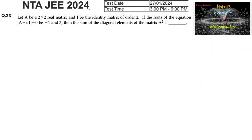Let capital A be a 2×2 real matrix and I be the identity matrix of order 2. If the roots of the equation det(A − xI) = 0 are −1 and 3, then find the sum of the diagonal elements of the matrix A². Let A = [[a, b], [c, d]] and I = [[1, 0], [0, 1]].